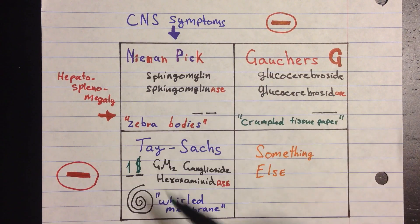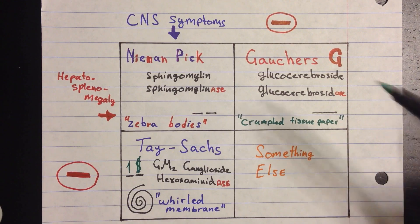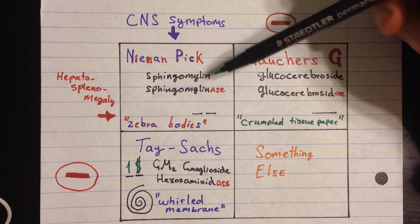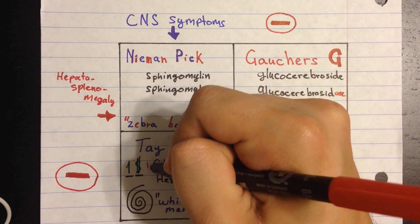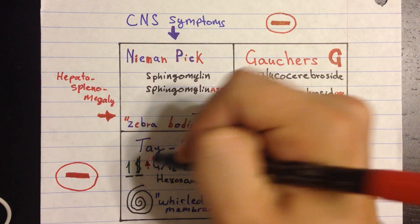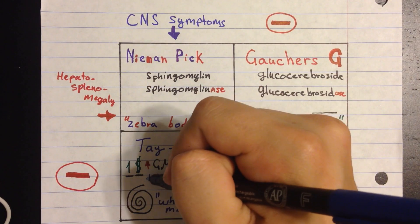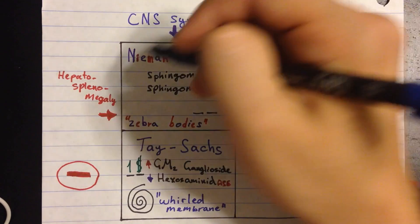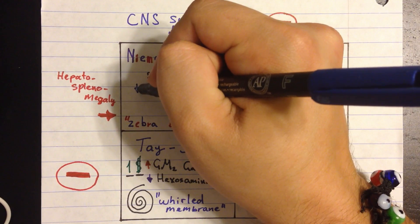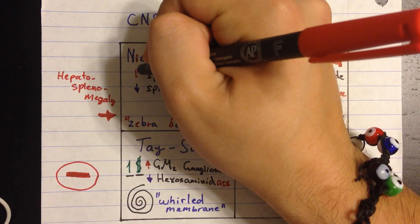That's the autosomal recessive disorder that causes Tay-Sachs. All these conditions are autosomal recessive. Now, if we're talking about Niemann-Pick, you have sphingomyelin which accumulates because the enzyme that breaks it down — sphingomyelinase — is deficient. In all these charts, the substrate builds up because the enzyme that works on it is deficient.